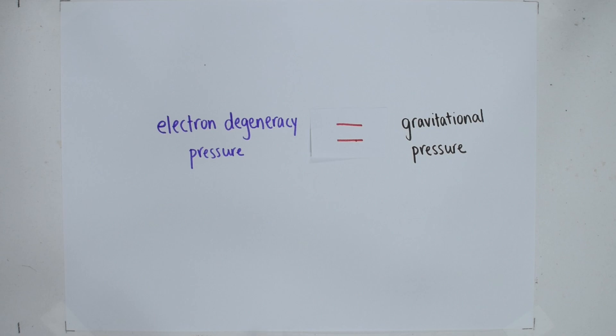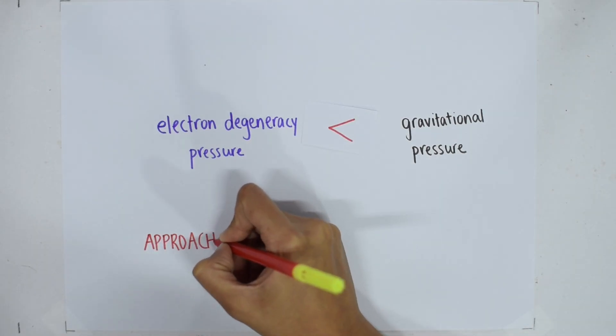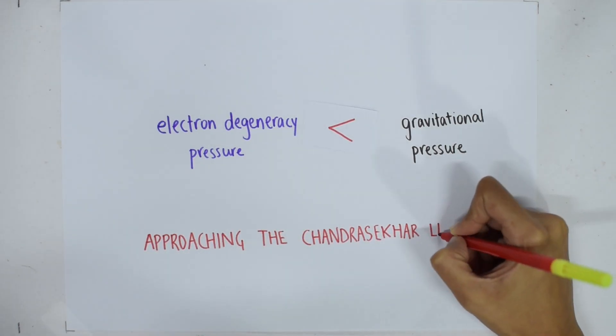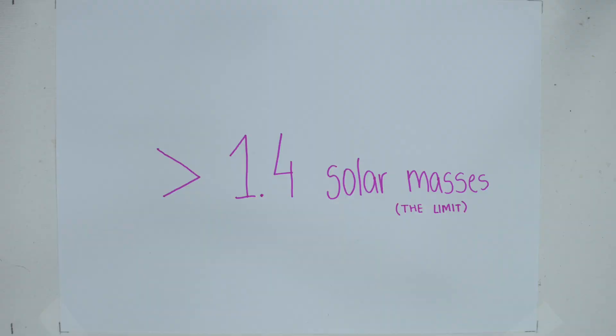This electron degeneracy pressure can only work to a certain extent, until the Chandrasekhar limit. This is the calculated mass beyond which the electron degeneracy pressure would no longer be able to counter the gravitational force, and a white dwarf would collapse. It is equal to 1.4 solar masses, or 1.4 times the mass of our sun.